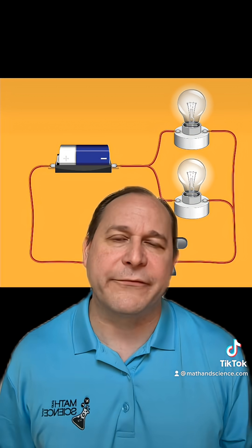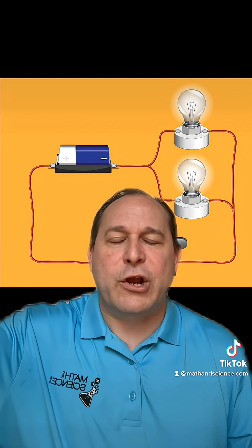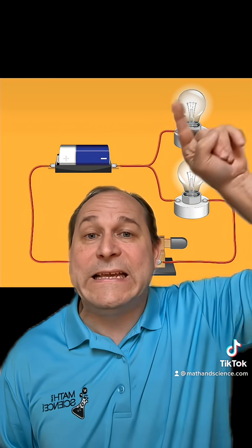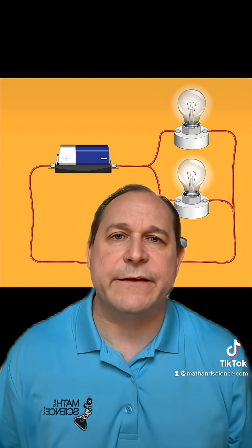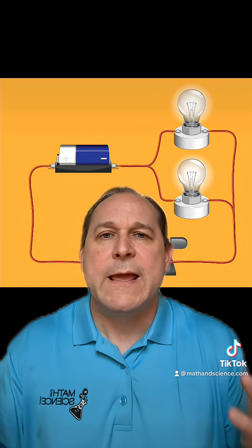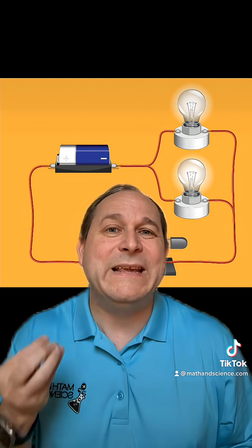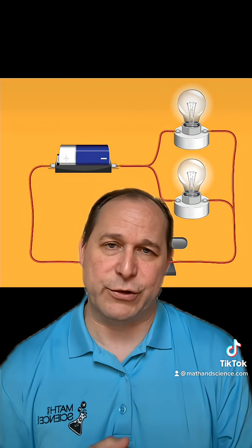Now when you use Kirchhoff's current law, basically the current going into the node, you choose an algebraic sign for that, and the current leaving the node, you choose the opposite sign. So there's a current convention involved, but it basically means that the current entering the node must be equal to all of the current exiting the node.